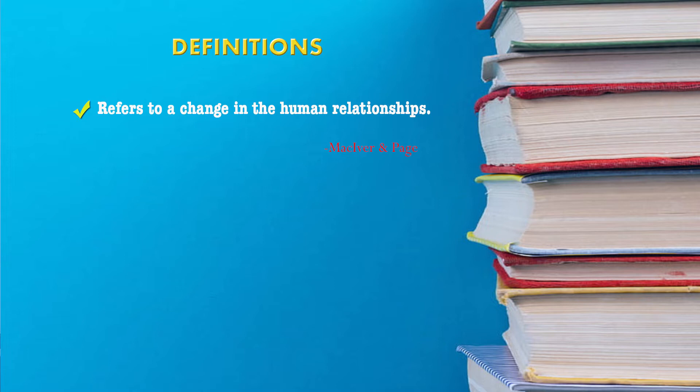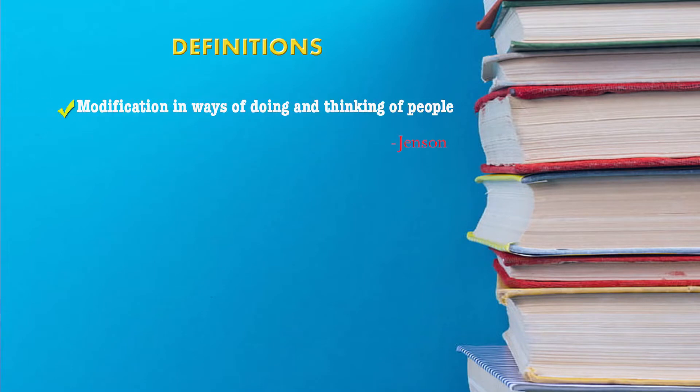Another important aspect highlighted by MacIver and Page is that social change also refers to change in human relationships. Whenever an individual or group moves from one ladder of society to another, there is a change in human relationships. For example, if a person is promoted to a higher level, she takes on greater responsibilities and forms different relationships at various levels. This change has been brought about because she moved up the ladder of professional growth, hence bringing about social change.